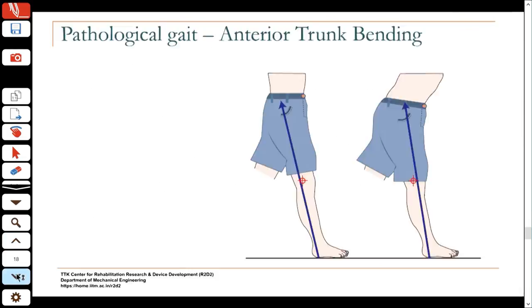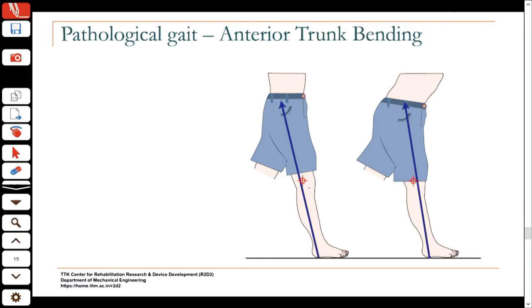Instead, when we look at pathological gait, we look at what function the person is trying to accomplish and the different ways they could accomplish it. We look at the nature of the gait rather than the nature of the pathology. For example, anterior trunk bending is one type of pathological gait that people with different pathologies could be adopting — we describe what is observed and discuss why the person would do that.